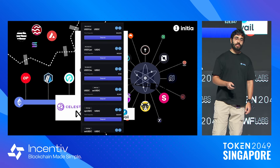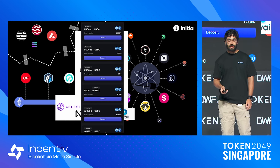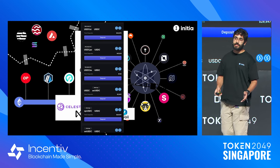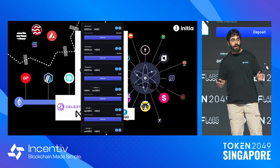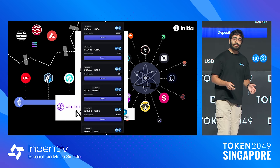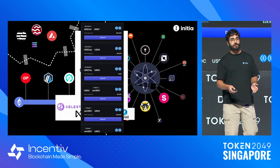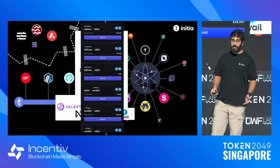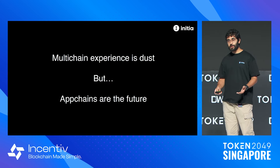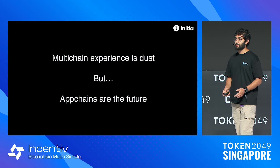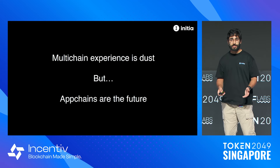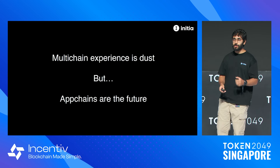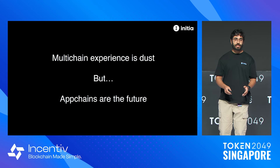Modularity also creates liquidity fragmentation. If you've ever been to Solana and tried to bring over USDC, you'll notice there are literally hundreds of different types of USDC. This is the worst friction for new users trying to come into our space. The multi-chain experience is kind of garbage right now — there's too many choices, too much fragmentation, it's really just not optimal.